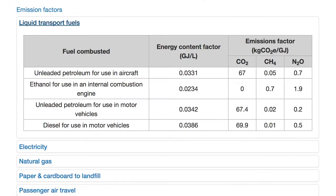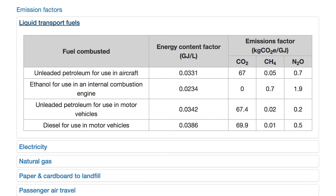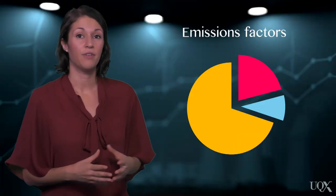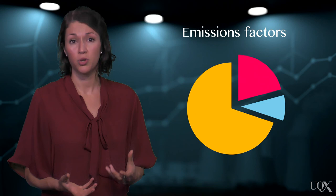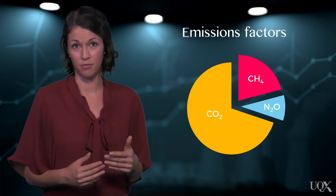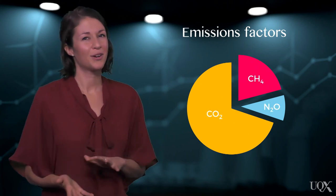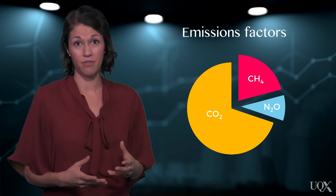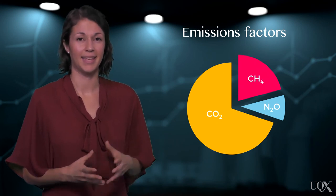You'll notice that some sources, such as diesel, have three emissions factors: one under CO2, one under CH4, and one under N2O, with all three expressed as carbon dioxide equivalents. This is so organisations have the option of analysing the specific contribution of the main greenhouse gases to their carbon footprint. We're not going to cover that extended analysis in this practical activity, but you can still input the values for each greenhouse gas in the calculation table.